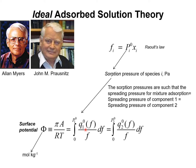In these integrals, these represent the unary isotherms for component i and the unary isotherms for component ii. Since the surface area A is not easily accessible, it is convenient to define the surface potential phi as the spreading pressure times the specific area divided by RT.